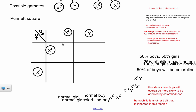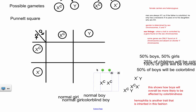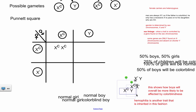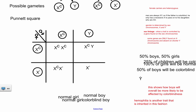Now it's just a matter of bringing these together. X^C from dad combined with X^C from mom gives X^C X^C. X^C from dad combined with X^c from mom gives X^C X^c. Then Y from dad combined with X^C from mom gives X^C Y. And Y from dad combined with X^c from mom gives X^c Y. When writing this, really make sure your letters are clear — always put the big letters first for organization purposes.